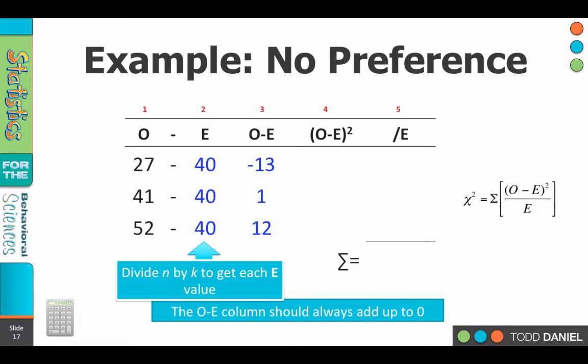Now we get to the squaring. In column 4, square the value that is in column 3, remembering that when you square a negative, it becomes positive. 13 squared is 169. 1 squared is 1 and 12 squared is 144.